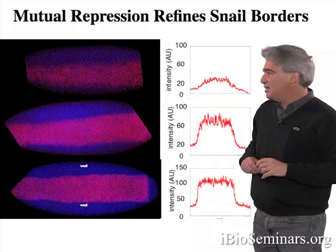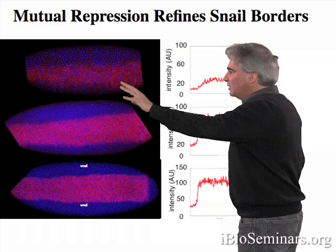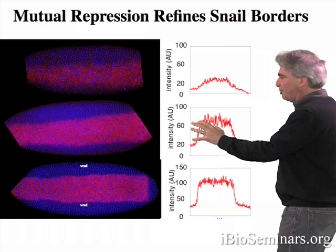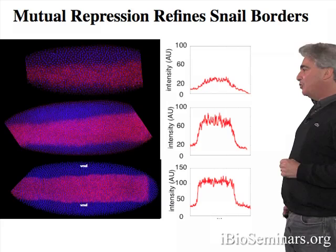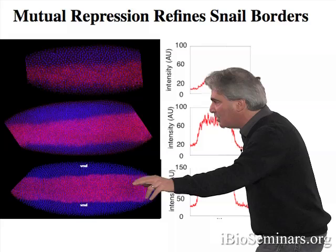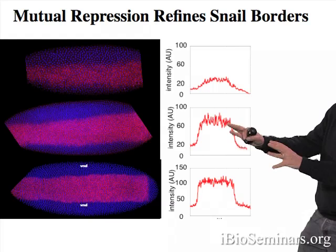This process can be seen in more detail here. You see the refinement of the lateral limits of the snail expression pattern. When snail first comes on, the borders are rather indistinct, but in a period of just 30 to 40 minutes they are quickly sharpened to form that razor-sharp boundary between the future mesoderm and the neurogenic ectoderm. The sharpening of the snail expression pattern depends on mutual repression between snail and lateral neurogenic repressors such as VND.